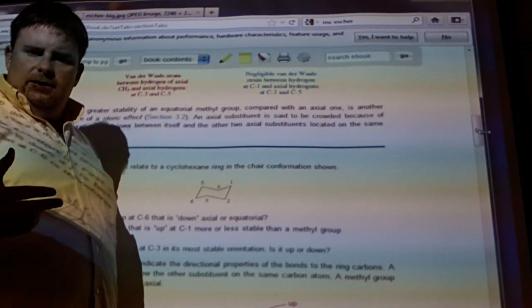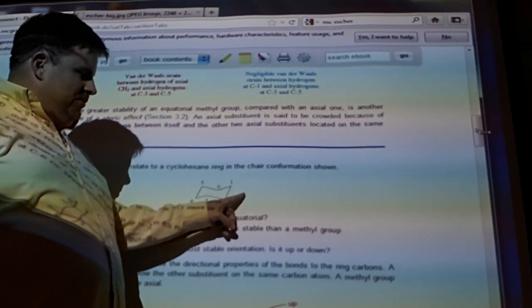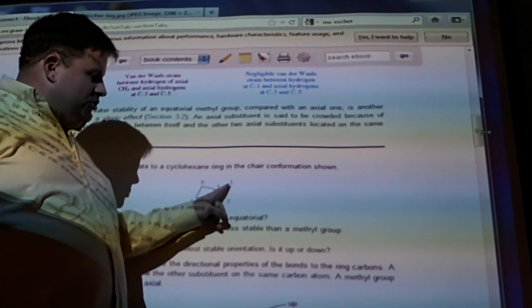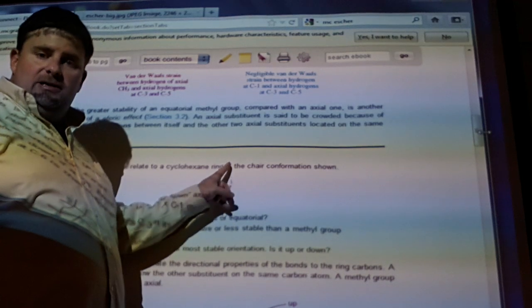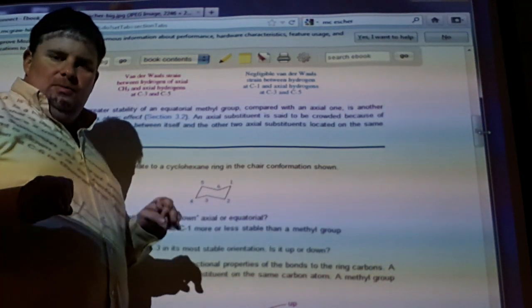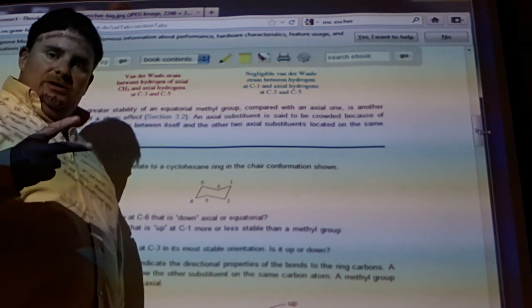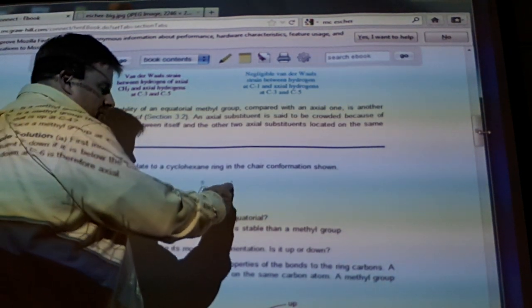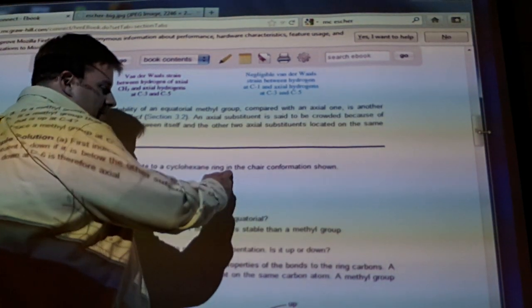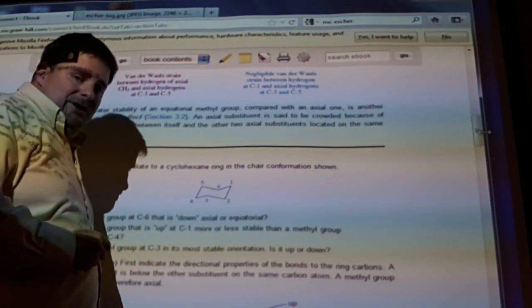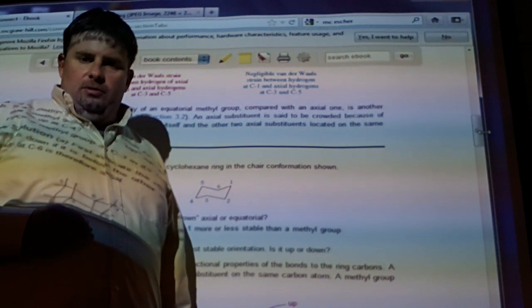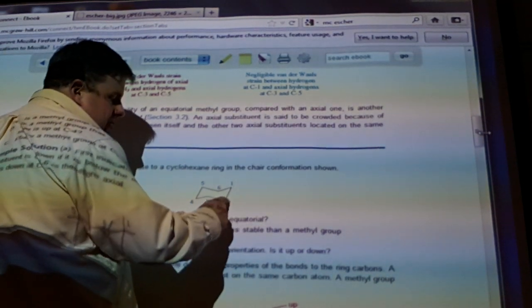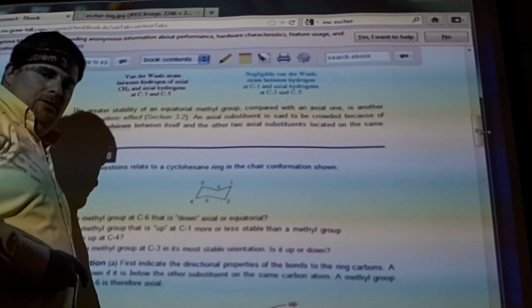Now, why is that the case? This one that is down is equatorial, right? But it's down with respect to the hydrogen that's sticking up. Always remember that. There's two things that are going to be on these carbons. There's one that's pointing up that's axial, or not necessarily axial, but there's one that's up relative to the other thing that's on top of it.